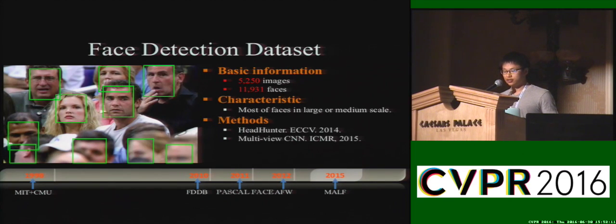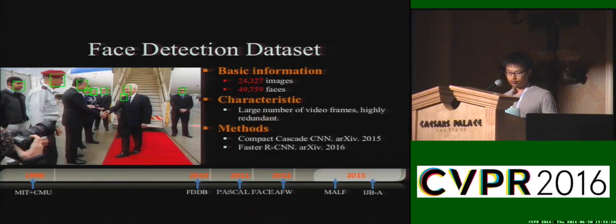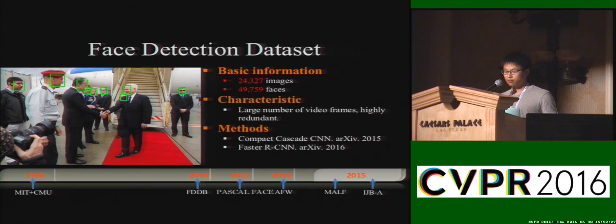The MALF dataset is the first face detection dataset that supports fine-grained evaluation; however, most of the faces are larger than 40 pixels. The IJB-A dataset is proposed for face detection and face recognition. It contains a large number of video frames, which involves high redundancy.